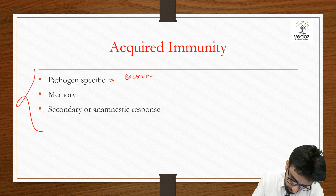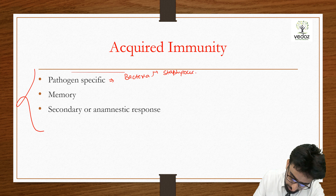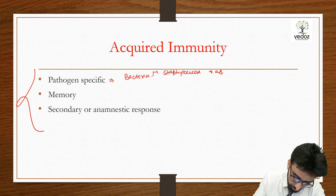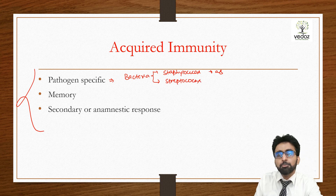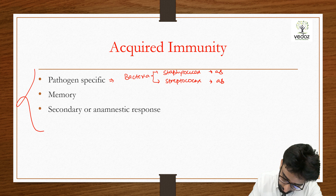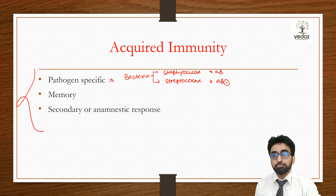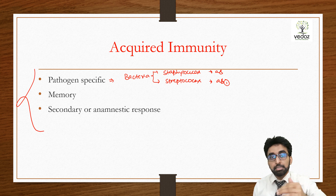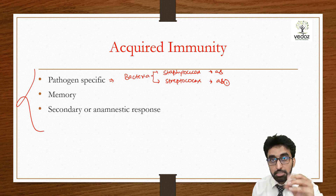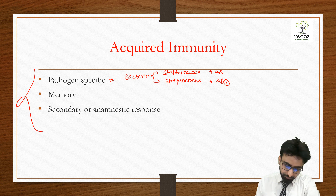For example, suppose a bacteria named Staphylococcus aureus enters the body, and one antibody is made specifically for it. Some days later, Streptococcus pneumoniae enters the body — the antibody formed for it will be different from the previous one. So for every pathogen or antigen that enters your body, the antibodies formed will be different. This is pathogen specificity.